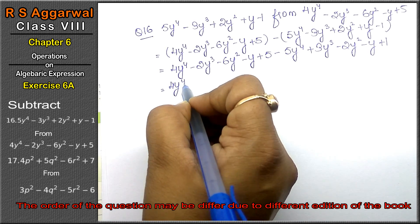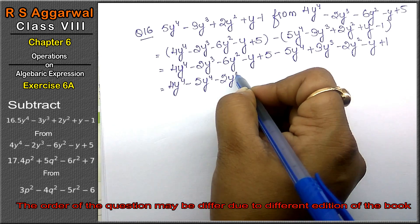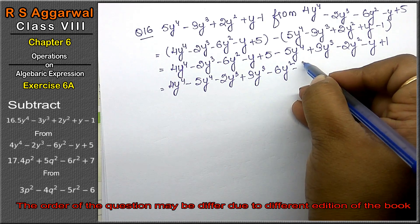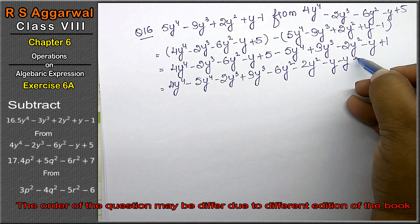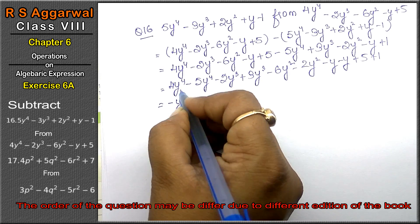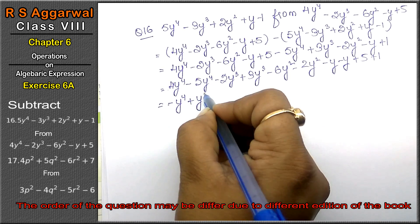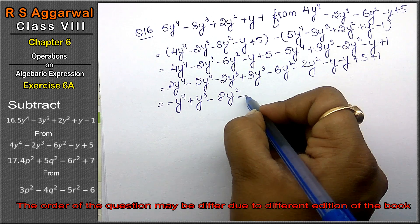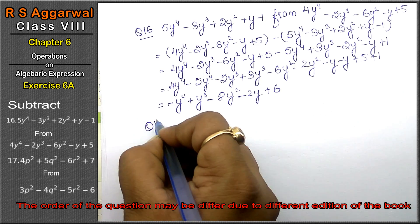Combining like terms: 4y⁴ - 5y⁴ = -y⁴, -2y³ + 3y³ = y³, -6y² - 2y² = -8y², -y - y = -2y, 5 + 1 = 6. Answer: -y⁴ + y³ - 8y² - 2y + 6.